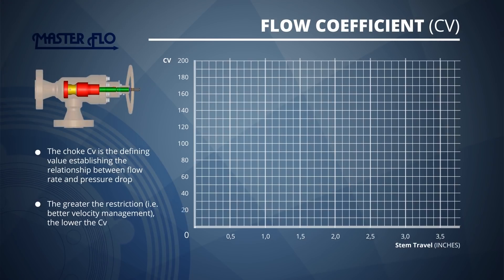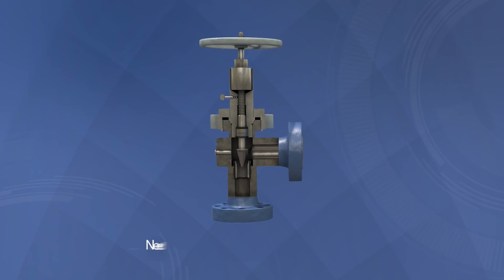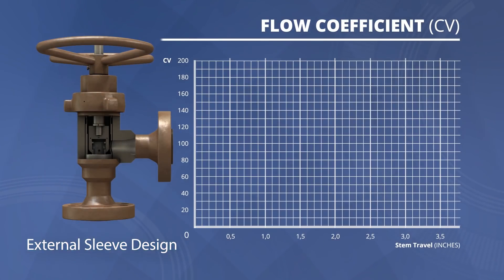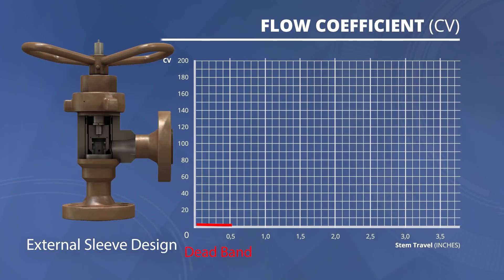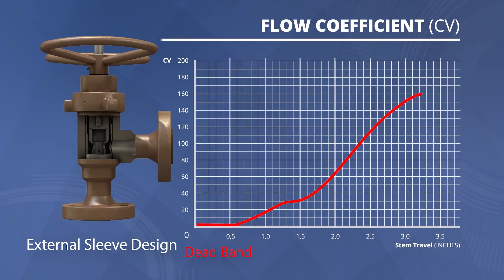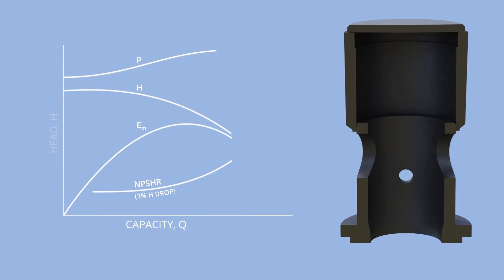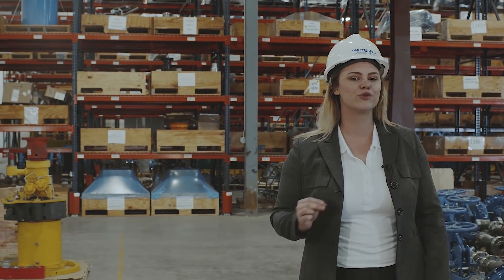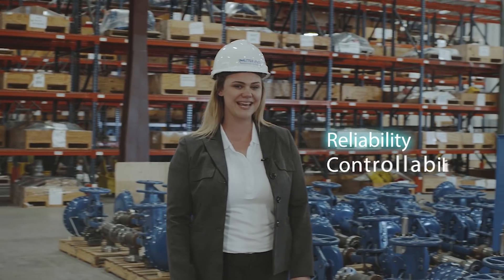A greater restriction provides better velocity management but lowers the flow capacity. When the seating area is close to the throttling area, erosion issues may occur, as frequently happens with the needle and seat valve. MasterFLOW solved this issue by incorporating a dead band area in the design of the external sleeve and cage choke valve. The dead band ensures that the throttling area is far from the seat, resulting in an area of zero flow. MasterFLOW's custom trims can be designed for a specific pump curve, providing high loss coefficients at low flows and low loss coefficients at high flows, eliminating the need for parallel valve operation and reducing maintenance while increasing reliability and controllability.